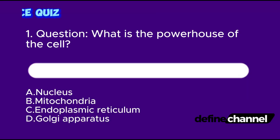Question 1. What is the powerhouse of the cell? A. Nucleus. B. Mitochondria. C. Endoplasmic Reticulum. D. Golgi Apparatus. Which is the correct answer?